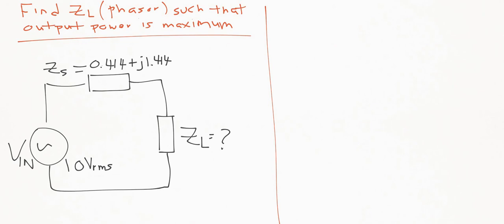No longer dealing with resistances here, but now it's complex, a series impedance of 0.414 and an imaginary part of 1.414. And so we want to find ZL such that the output power of this circuit is maximized.